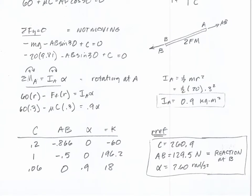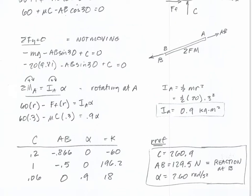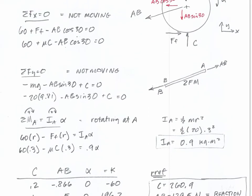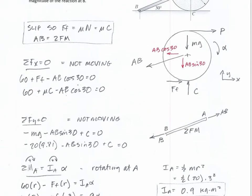Solving the system gives alpha equal to 2.6 and AB equal to 129.5. The force in AB is also the reaction at B, which is what we wanted to find. For grading: the free body diagram and each equation are worth about five points apiece. The slip condition concept was worth several points, and finding the magnitude of B was worth about four points. If I took off more than about five points for any one piece, that may have been an error — please see me if you think I graded incorrectly.